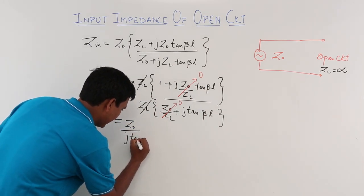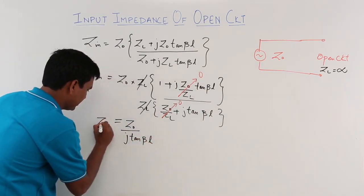1 times this quantity gets zero divided by J tan beta L. So this is my input impedance.